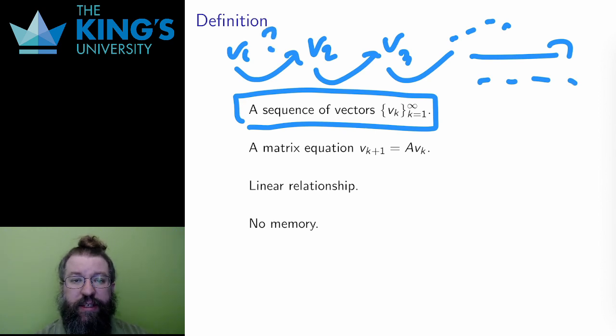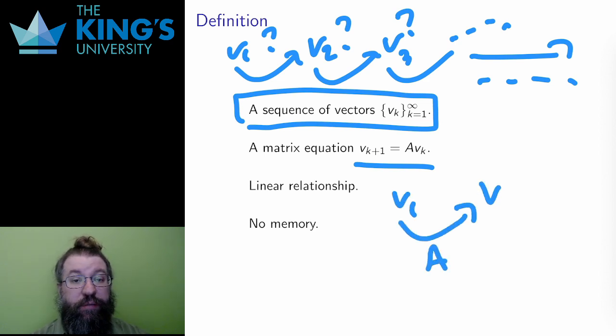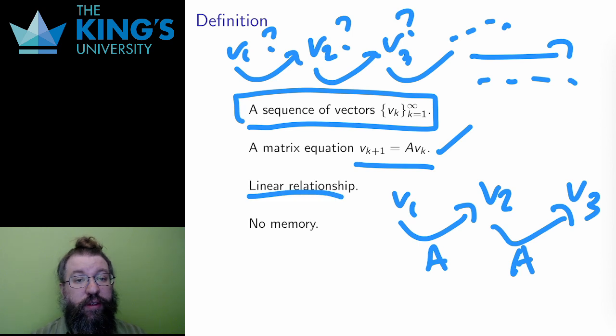How does the model move from one state to the next? If the process is linear, its progression can be described by a matrix action. That is, there exists a matrix A such that for all k, v_k+1, the next state, is the matrix applied to v_k, the previous state. This is a dynamical system. A sequence of vectors where going from each to the next is a matrix operation. Dynamical systems are powerful and important mathematical models.